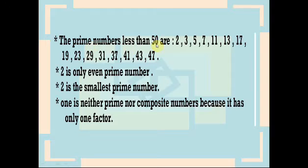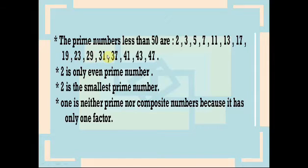The prime numbers less than 50 are 2, 3, 5, 7, 11, 13, 17, 19, 23, 29, 31, 37, 41, 43, and 47. All these numbers are prime numbers less than 50 because all of them have only two factors.